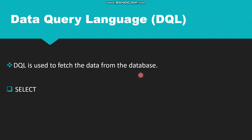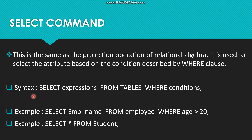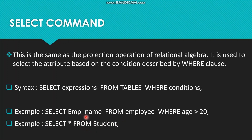Then we have Data Query Language — DQL — used to fetch data from the database using the SELECT command. The SELECT command is similar to the projection operation in relational algebra. It selects attributes based on conditions described by the WHERE clause. Syntax: SELECT expression FROM table WHERE condition, or SELECT * FROM table_name. Example: SELECT employee_name FROM employee WHERE age > 20, or SELECT * FROM student to get all columns and all information.